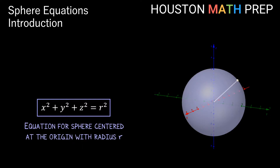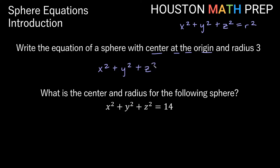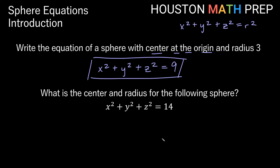This probably looks familiar — it's very similar to the equation for a circle centered at the origin in 2D space, but with this extra z term included because we're in 3D space. Let's answer a quick question: write the equation of a sphere with center at the origin and radius 3. Using x squared plus y squared plus z squared equals r squared, with radius 3, we get 3 squared equals 9. So the equation is x squared plus y squared plus z squared equals 9.